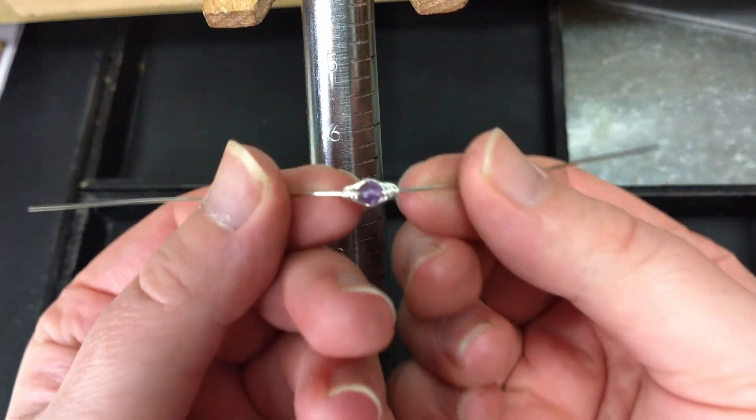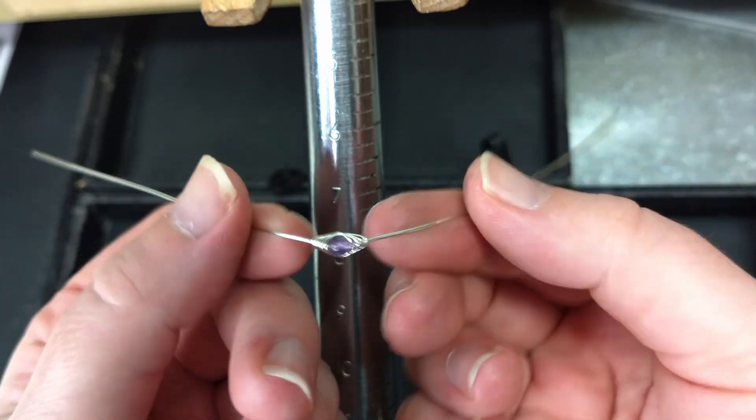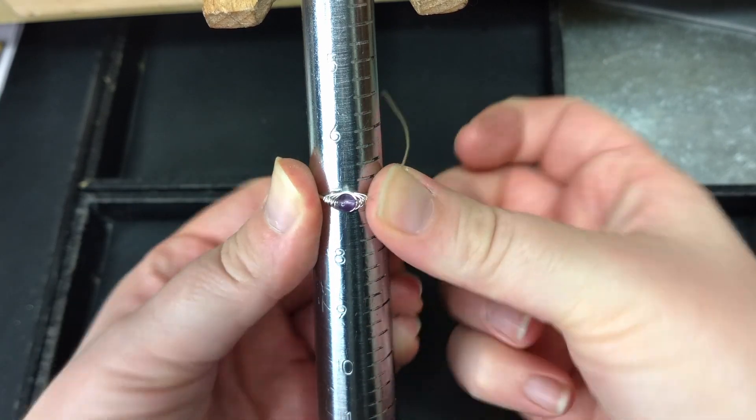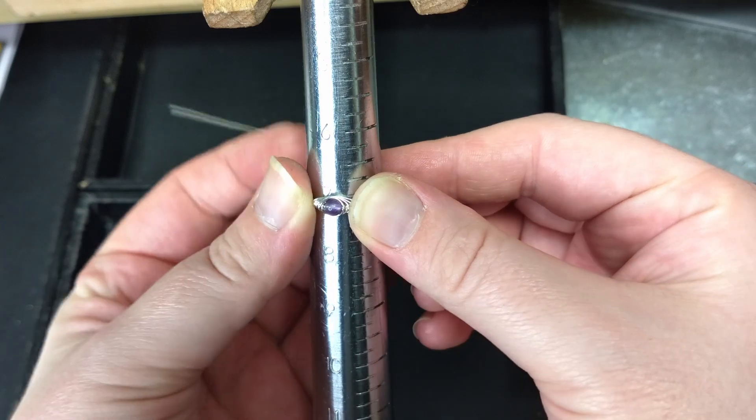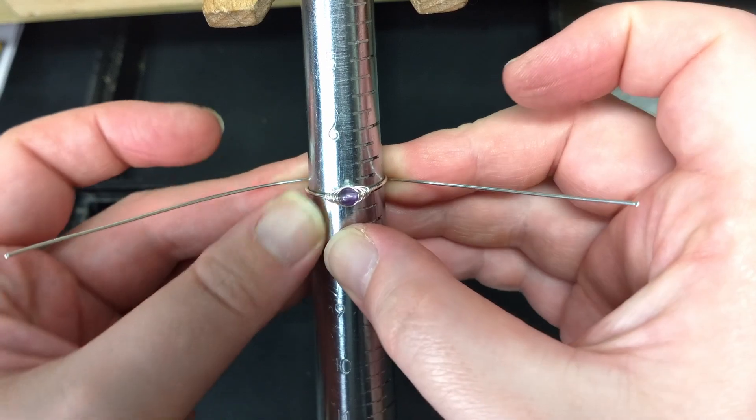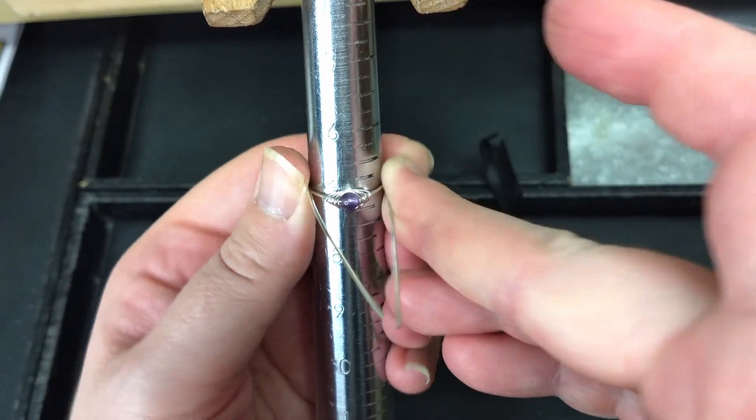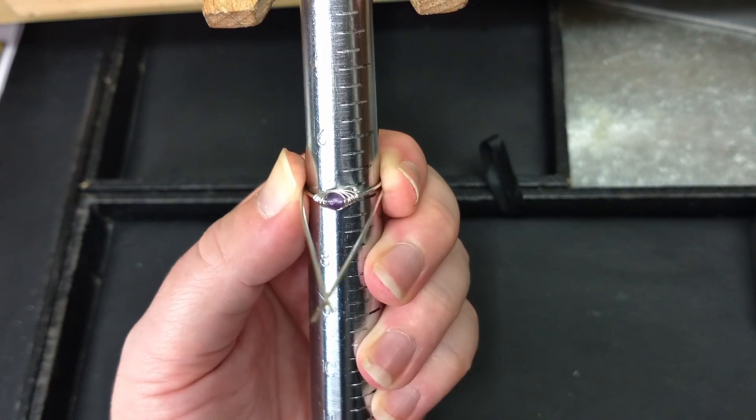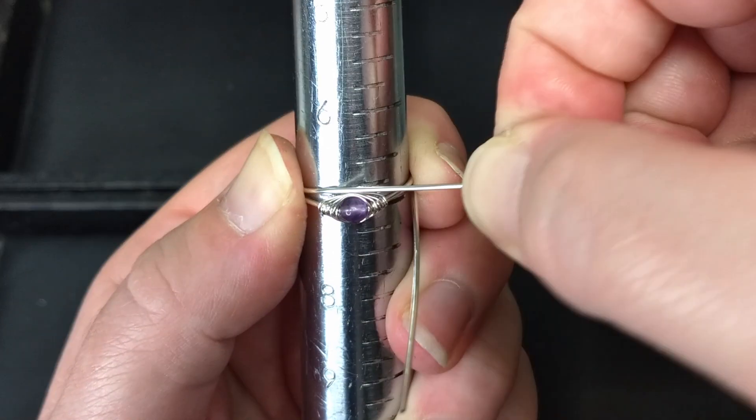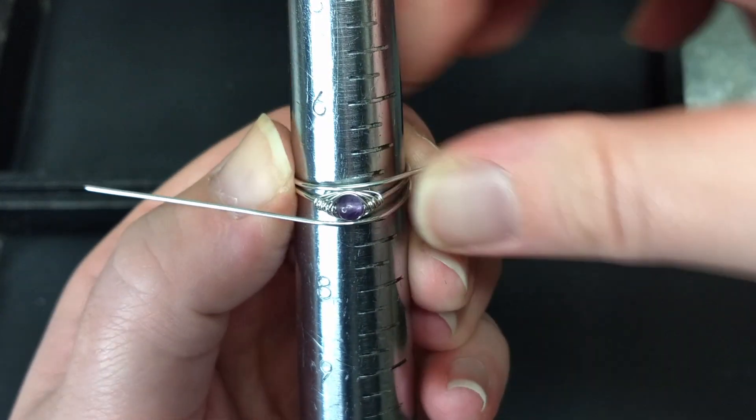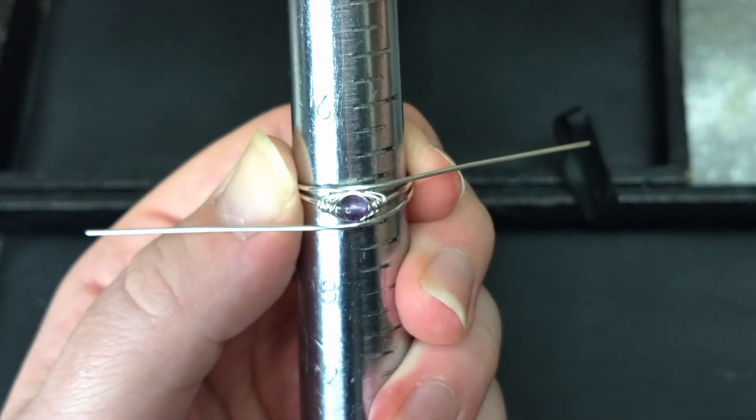Now wrap the whole band around the mandrel two sizes smaller than you need the ring to be at first. Bend the two wire tails over the top and underneath the ring. And then slide down the ring to the size that you need.